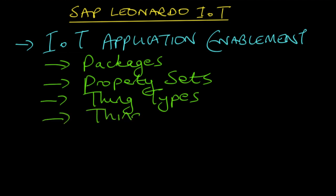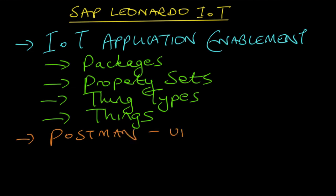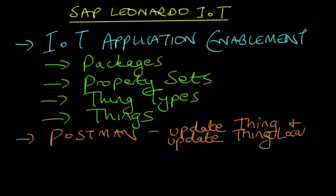Ultimately you then model the things based on your thing type. The difference between a thing and a thing type is that the thing will have a unique ID with values such as a unique name and a unique location. Using the RESTful API and Postman, we're going to update both the thing and the thing location — for example, if your thing is not a greenhouse but a truck that moves, you can keep the location and attributes updated.